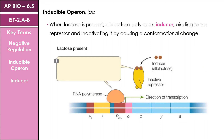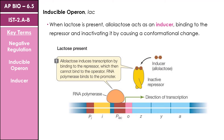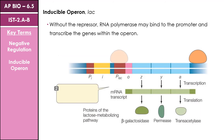However, when lactose is present, allolactose acts as an inducer — it binds to the repressor, which essentially causes it to be removed from the operator sequence. It undergoes a conformational or shape change that allows it to no longer bind to the operator sequence. This allows RNA polymerase to bind to the promoter and thus transcription can occur. When the repressor is removed, RNA polymerase is able to bind and then transcribe the genes within the operon itself, so we're able to produce those proteins that were once repressed.